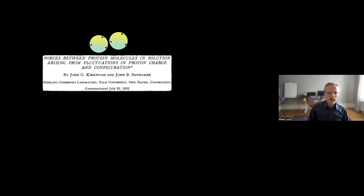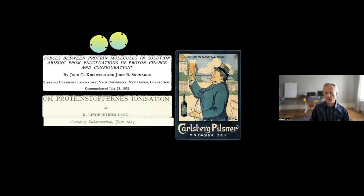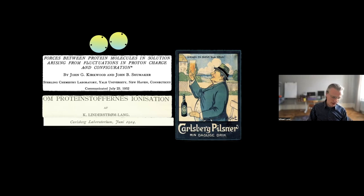This was discovered a long time ago by Kirkwood and Shumaker in a paper from the early 1950s. But it turns out the charge regulation mechanism was actually discovered 30 years earlier by Kai Linderstrøm-Lang from the Carlsberg Laboratories. At that time they were very interested in the physical chemistry of proteins. Linderstrøm-Lang's boss was the one who established the pH concept — all of this in trying to understand enzymes and proteins for beer production.